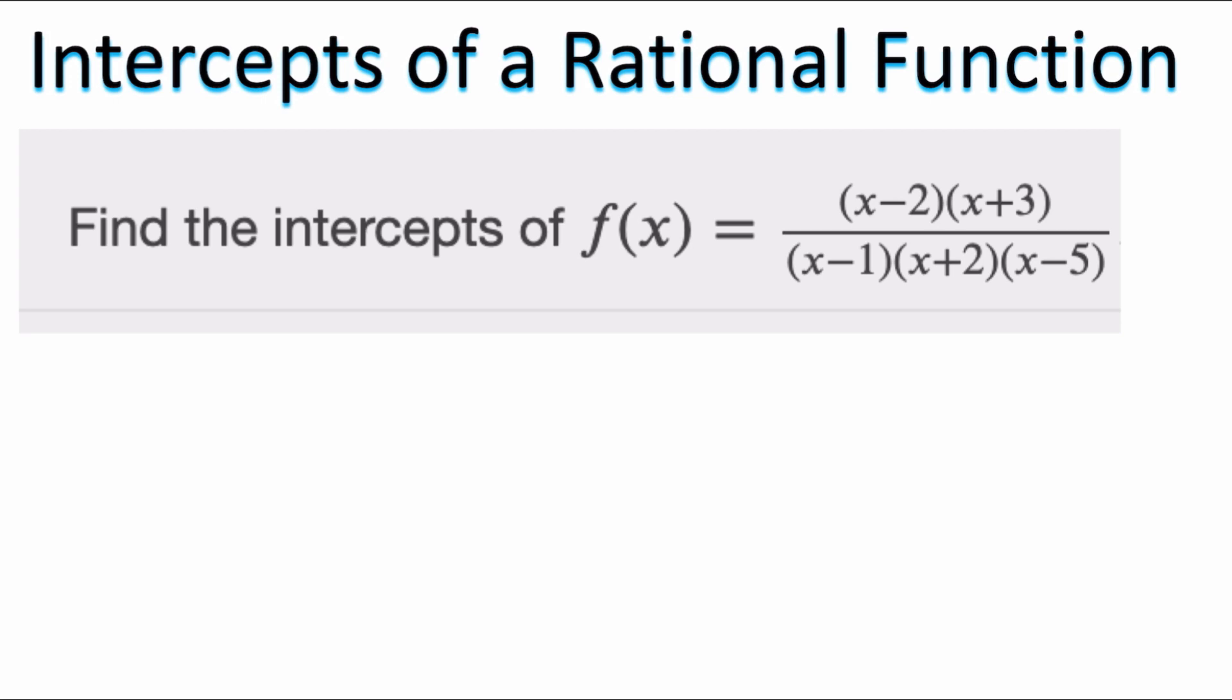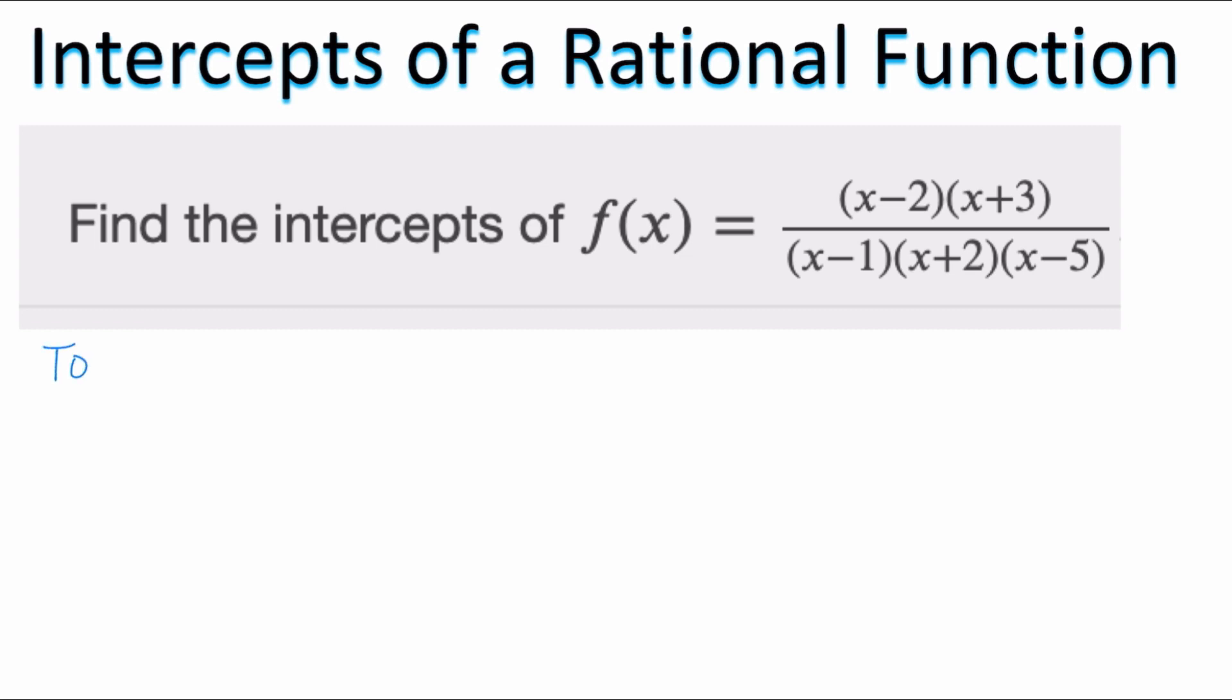So if you take a look right now we have f of x is equal to x minus 2 times x plus 3 over x minus 1 times x plus 2 times x minus 5. So what we need to do is find the x and y intercepts.